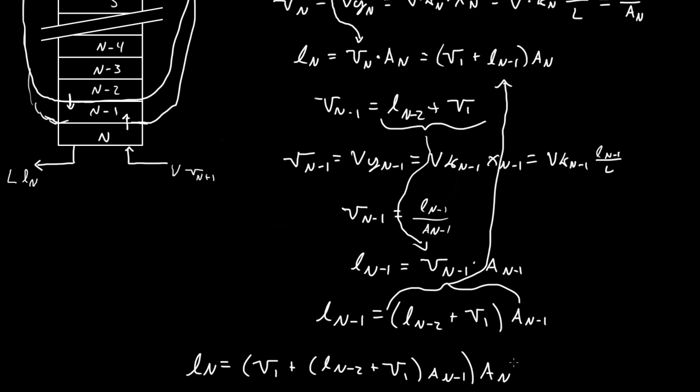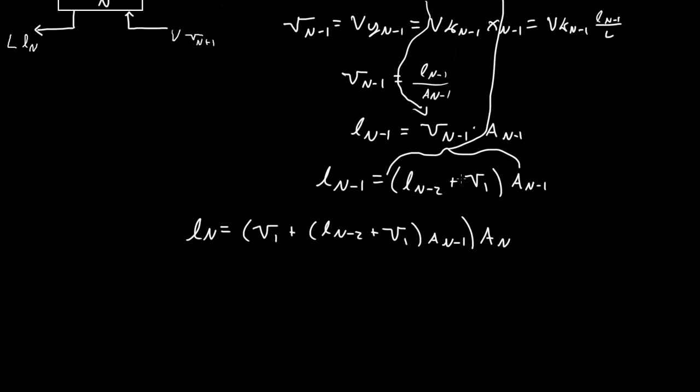If we repeat the process over and over again, you would see that all you're doing is adding in something like this. If you just repeat the process going through it again, the next equation we plug in is L_{n-2} equals L_{n-3} plus V_1 A_{n-2}. So then you plug this right there and you just keep doing it.